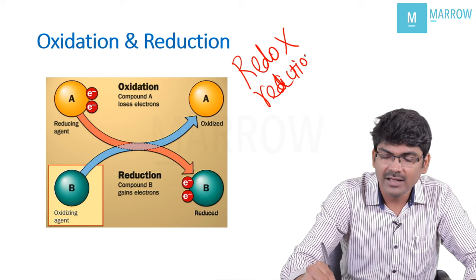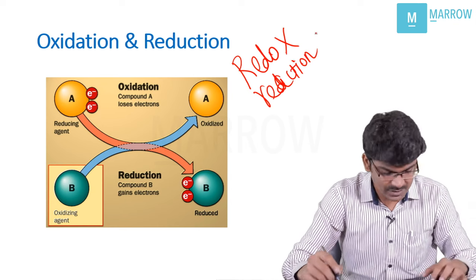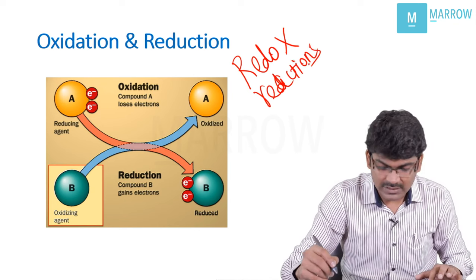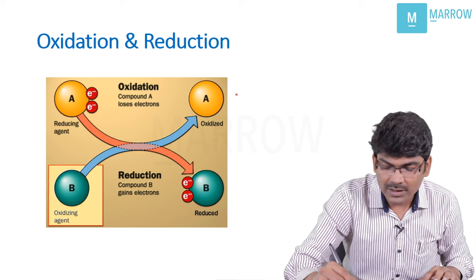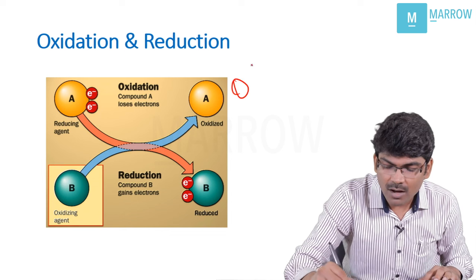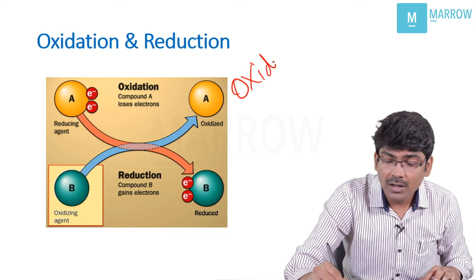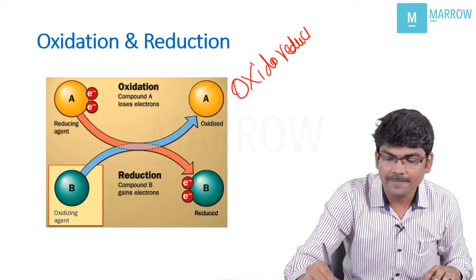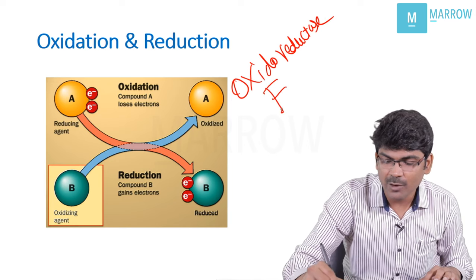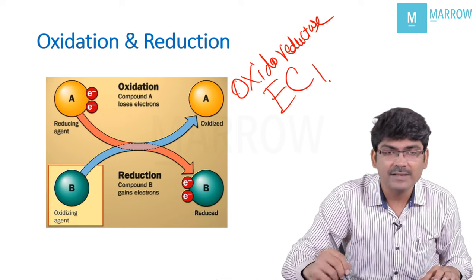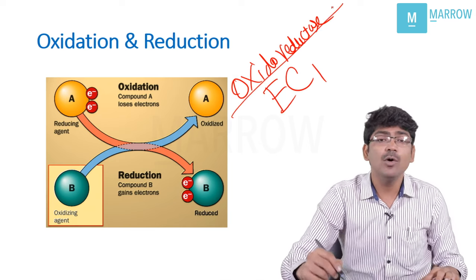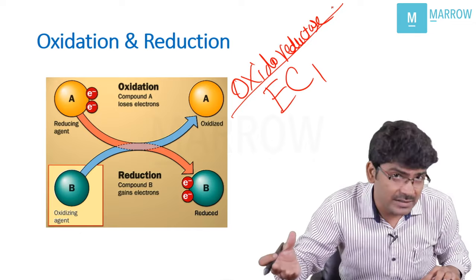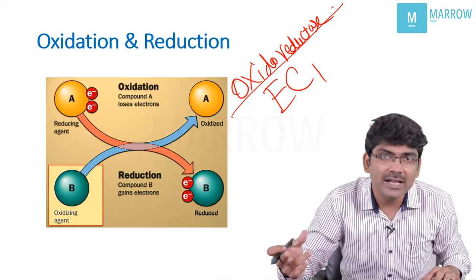Enzymes which catalyze these reactions are known as oxidoreductases. That is your EC1, enzyme class 1. They are oxidoreductases.